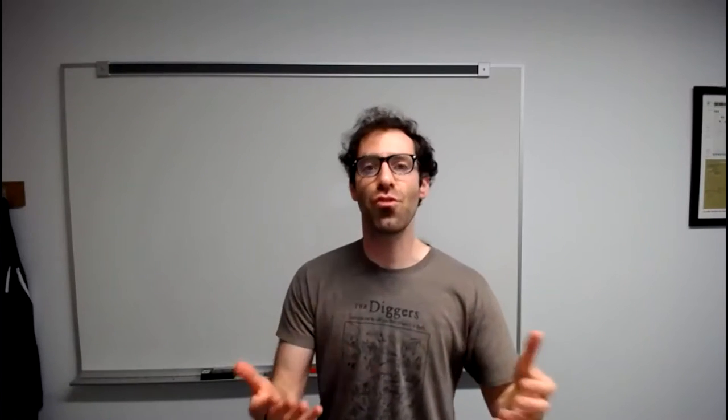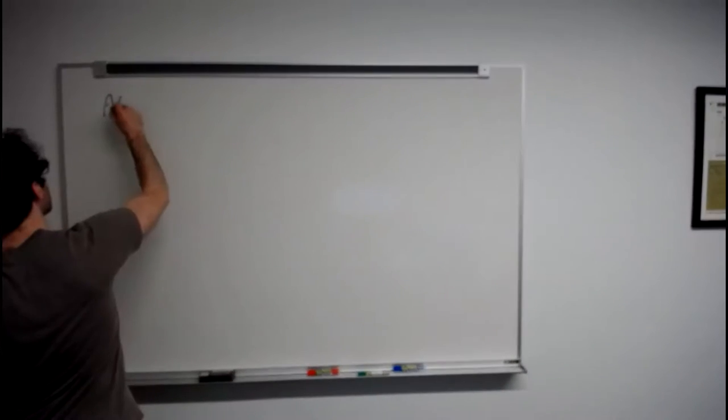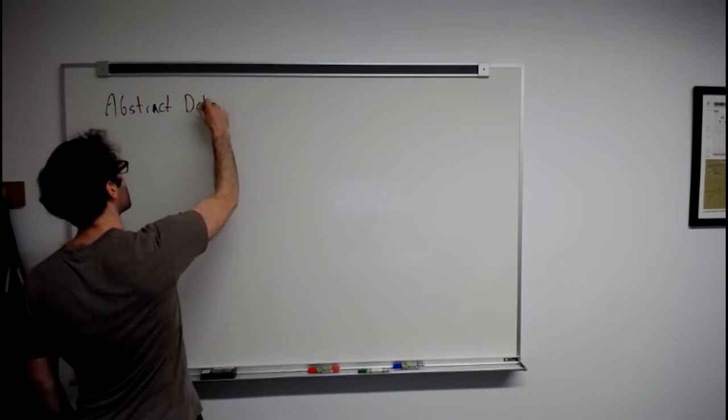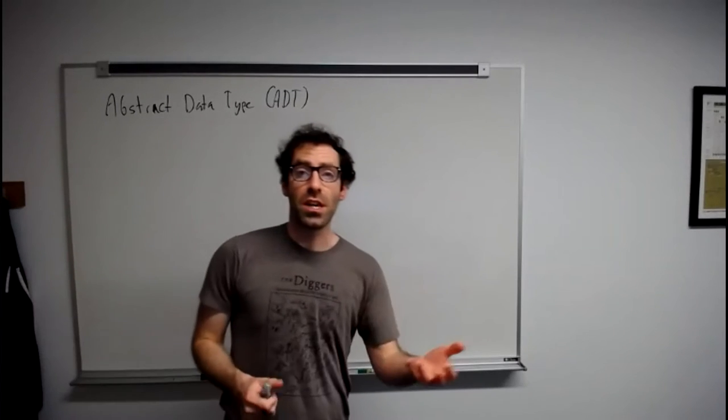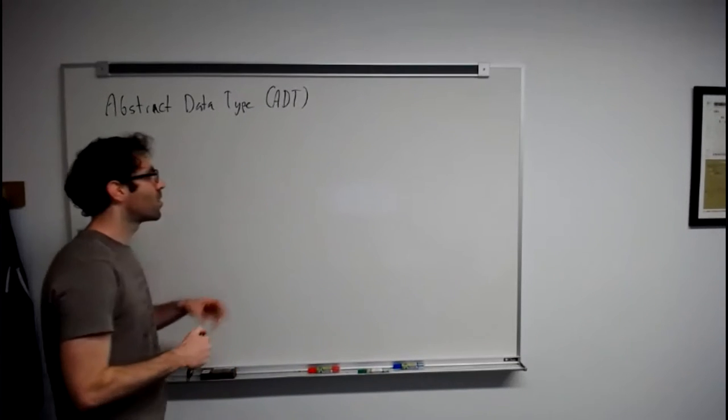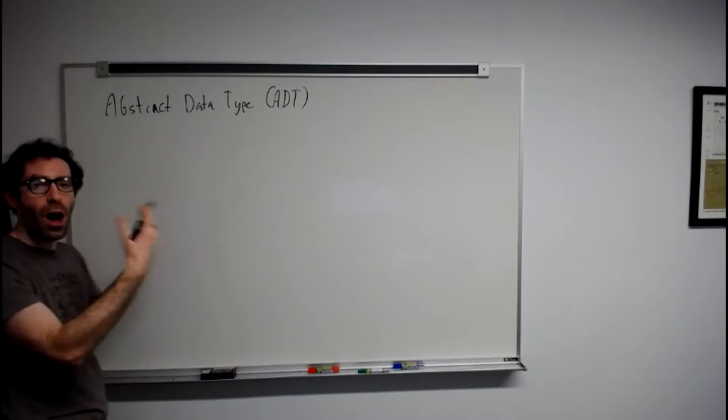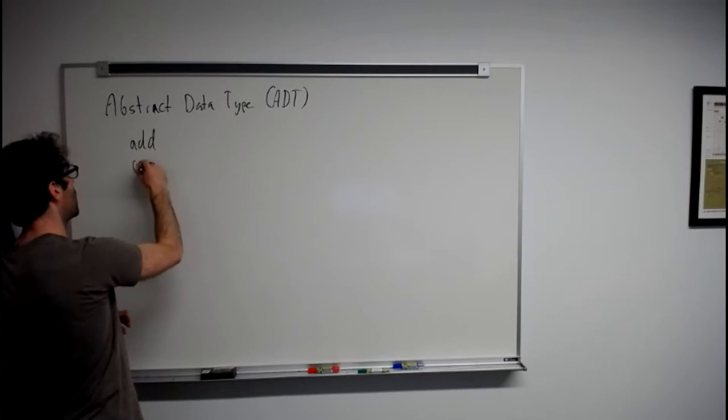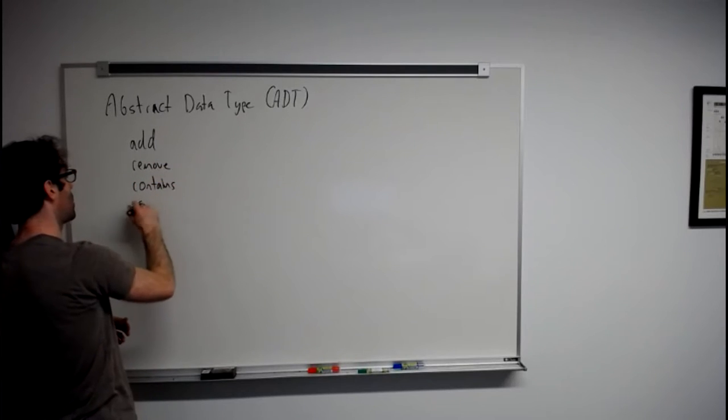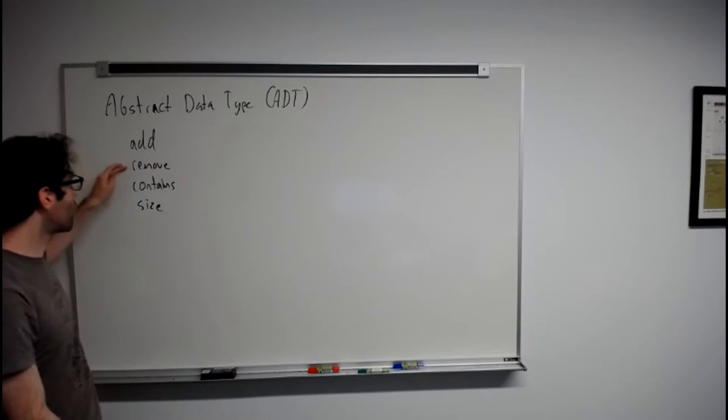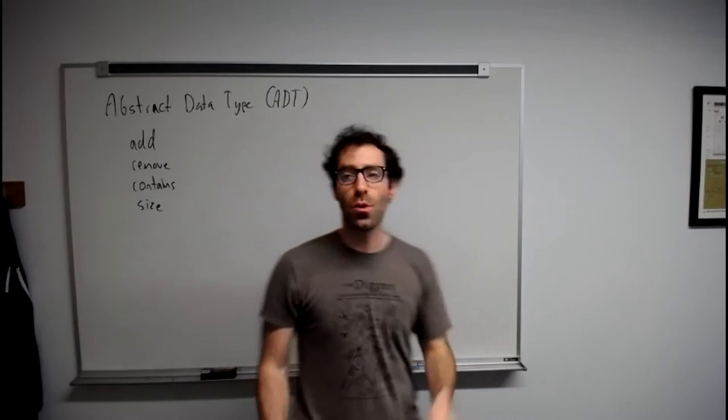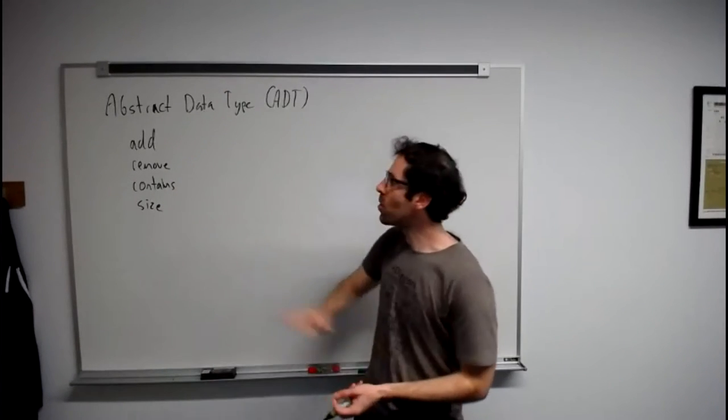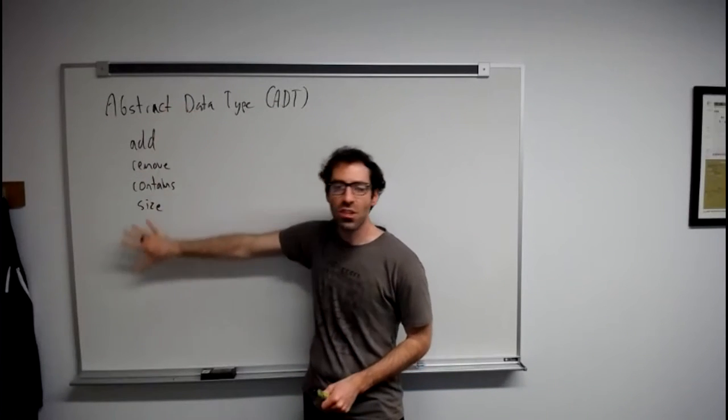When we think about data structures, we often refer to the interface for a data structure as the abstract data type, or ADT. We would say that the abstract data type of a list says a list type thing has operations such as add, remove, contains, and size. All right, lists can do these things.